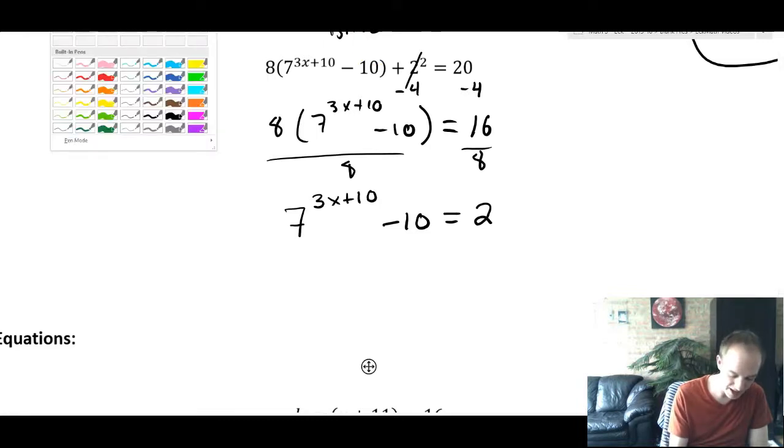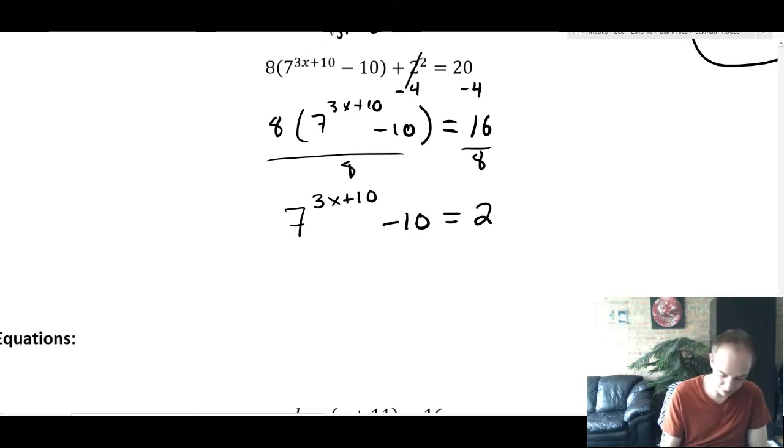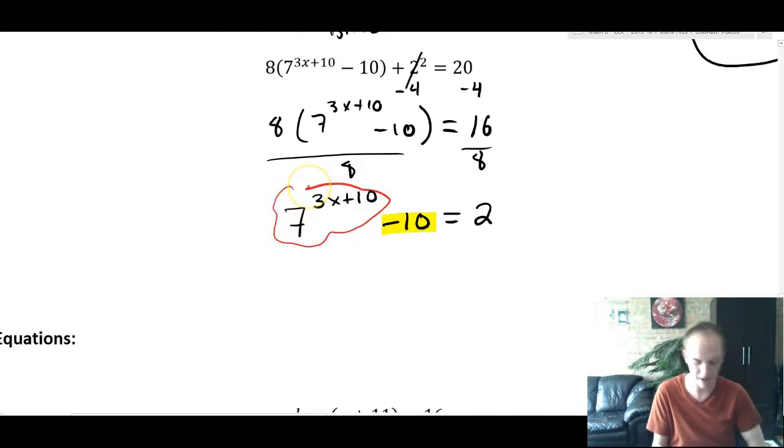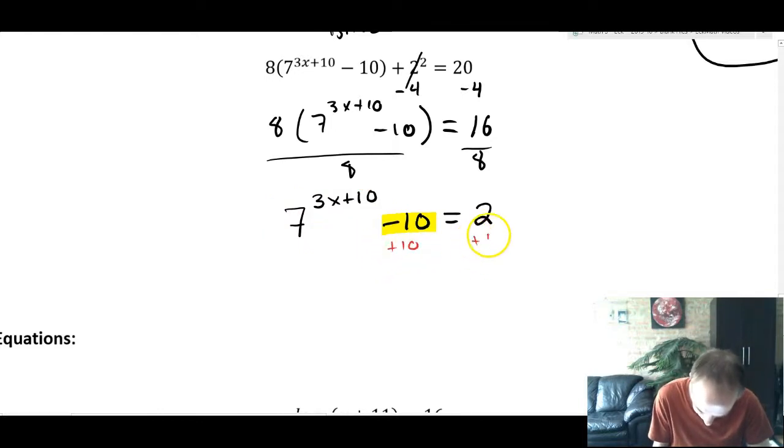You may be looking at these 10s and thinking, don't those cancel? But the answer is no. A 10 up here in a power and a 10 down here that's subtracted are completely different critters. And we're going to deal with this 10 next. But to get to the 10 up here in the top, we have to do a logarithm. So it's all about orders of operations and isolating the exponent, isolating the power, so that we can get into that exponent. All right, so we'll add 10. And we'll get 7^(3x+10) = 12.